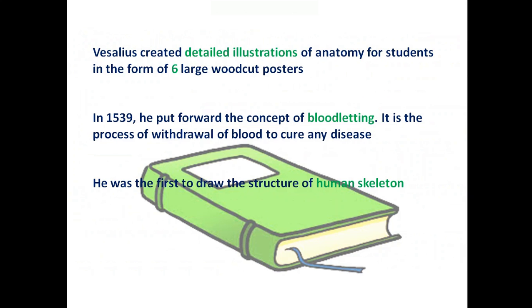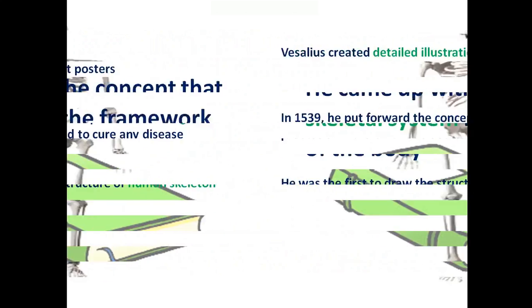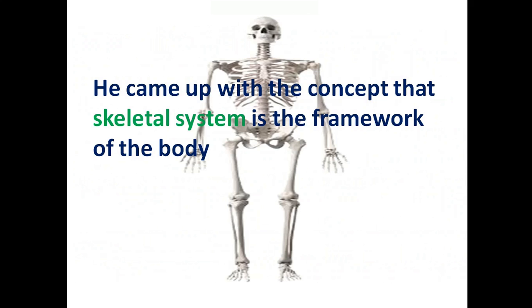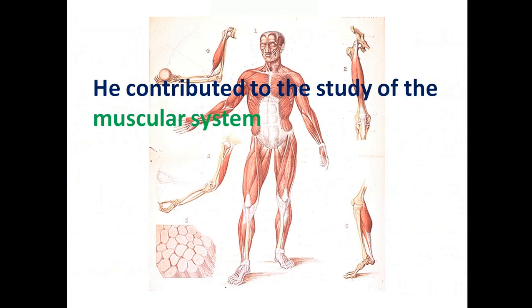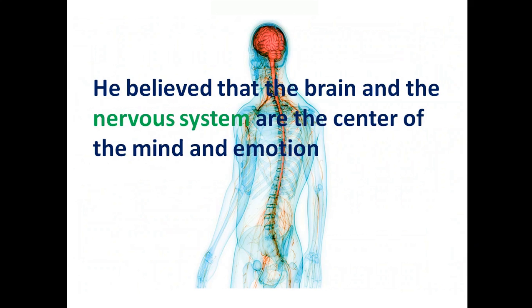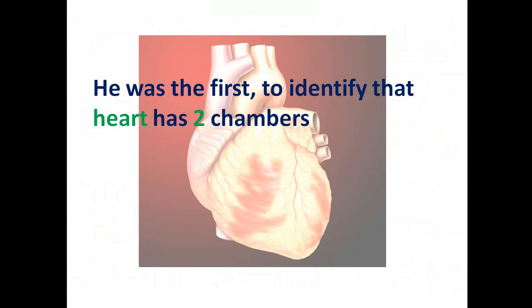He was the first to draw the structure of the human skeleton, and came up with the concept that the skeletal system is the framework of the body. He contributed to the study of the muscular system. He believed that the brain and the nervous system are the center of the mind and emotion. He was also the first to identify that the heart has two chambers.